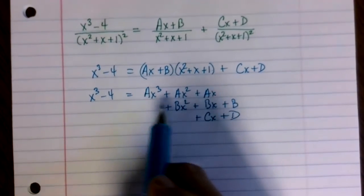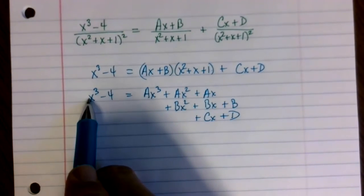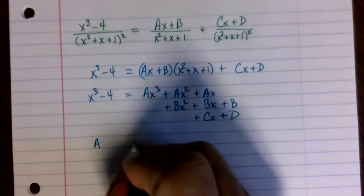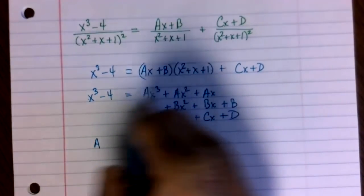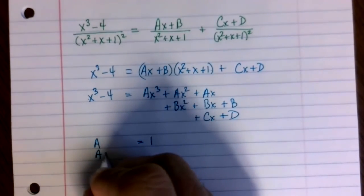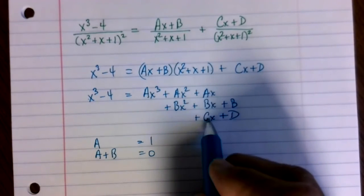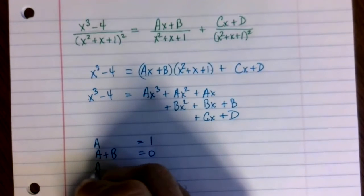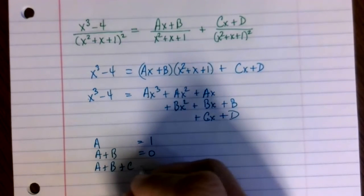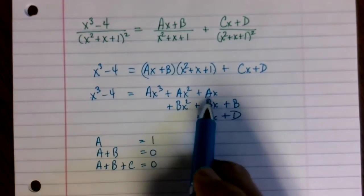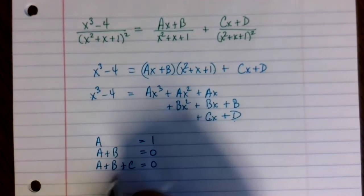And so matching the coefficients, we see that a has to be equal to 1. We see a plus b is going to match 0x squared. a plus b plus c matches 0x, and b plus d will match the negative 4.